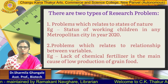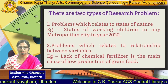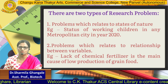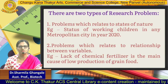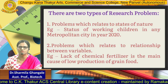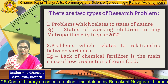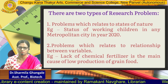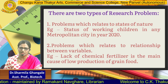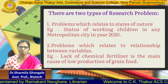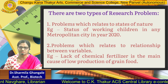There are two types of research problems which exist in nature. The first type is problems which relate to the state of nature. For example, the status of working children in any metropolitan city in the year 2020 — this is a survey-based research where we accumulate the entire survey of working children in a metropolitan city. When you have the problem, you can formulate the aspect on which you need to work.